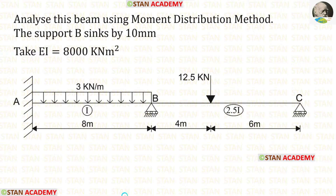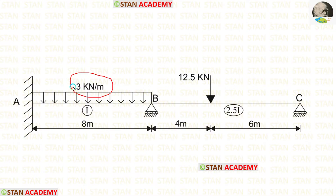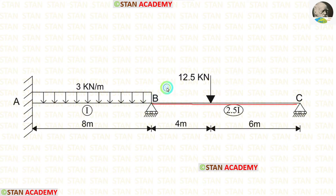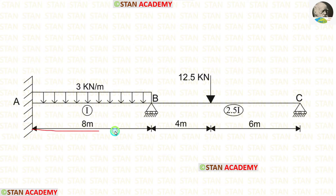Before starting the analysis, let us see the beam. In this beam, there are two spans: span AB and span BC. In span AB, there is a uniformly distributed load of 3 kN/m acting for the full span. In span BC, we have an eccentric point load of 12.5 kN acting at 4 m from point B. The length of span AB is 8 m and the length of span BC is 10 m.